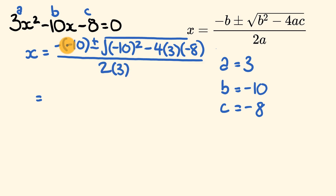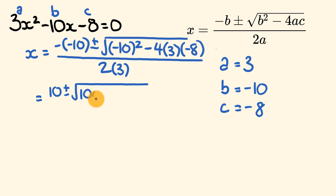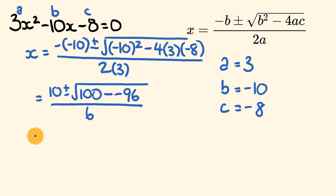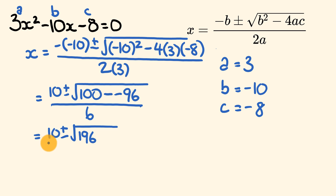Let's clean this up. Negative negative 10 is equal to 10, plus or minus the square root of negative 10 squared. Negative 10 times negative 10 is 100. From this we subtract 4 times 3, which is 12, times negative 8, which is negative 96. And all of this goes over 2 times 3, which is 6. So we have 10 plus or minus the square root of 100 minus minus 96 — these two minuses together make a positive — so 100 plus 96, which is 196, over 6.